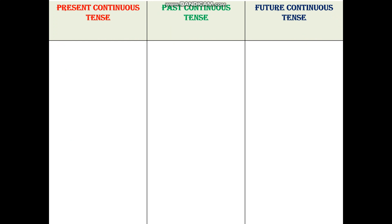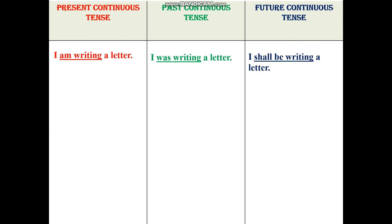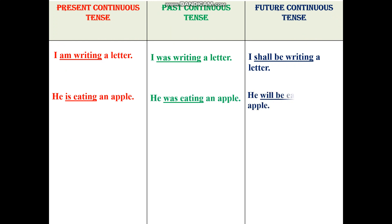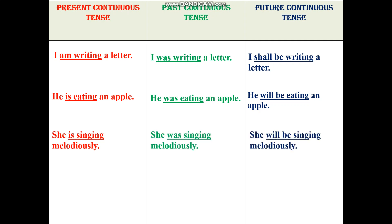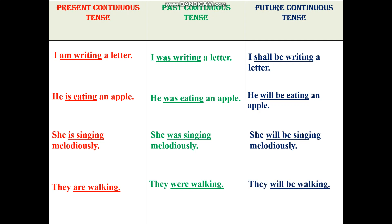Next, we come down to present continuous tense, past continuous tense and future continuous tense. First example of present continuous tense: I am writing a letter. I was writing a letter. I shall be writing a letter. He is eating an apple. He was eating an apple. He will be eating an apple. She is singing melodiously. She was singing melodiously. She will be singing melodiously. They are walking. They were walking. And they will be walking.